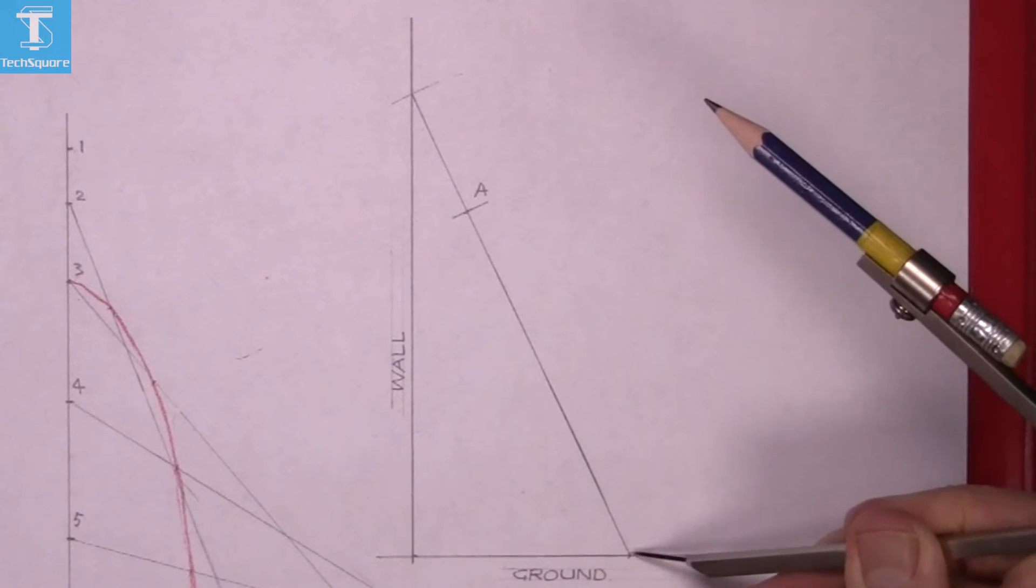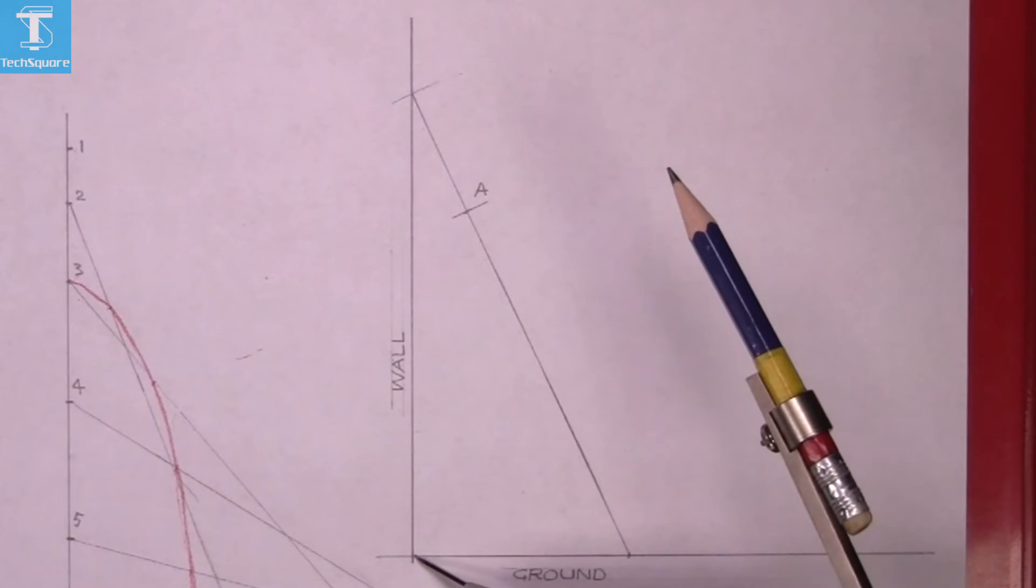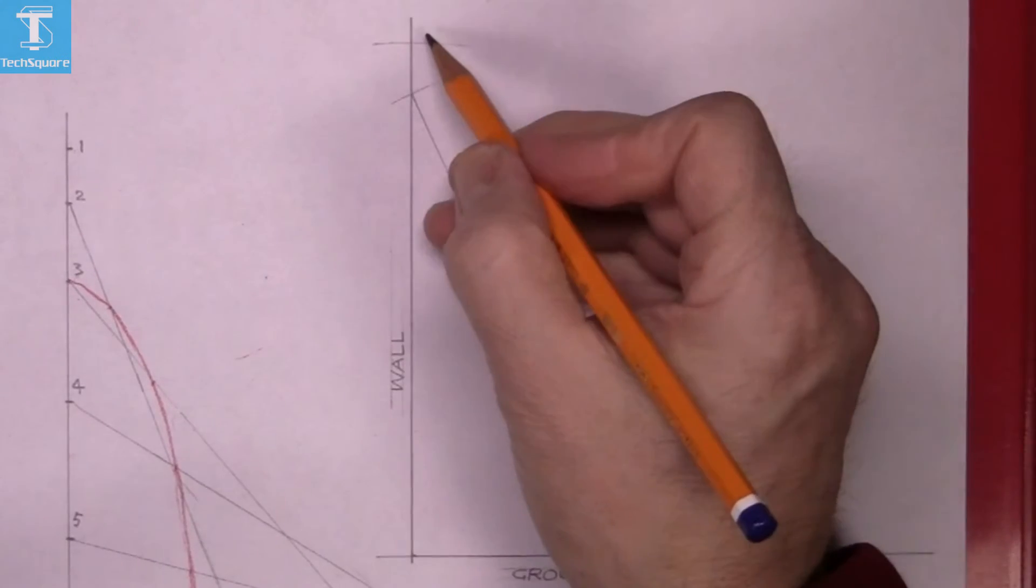The first thing you do is set the compass to the length of the ladder. Position the compass in the bottom point here and mark where the top of the ladder would be. We'll mark that as point one.